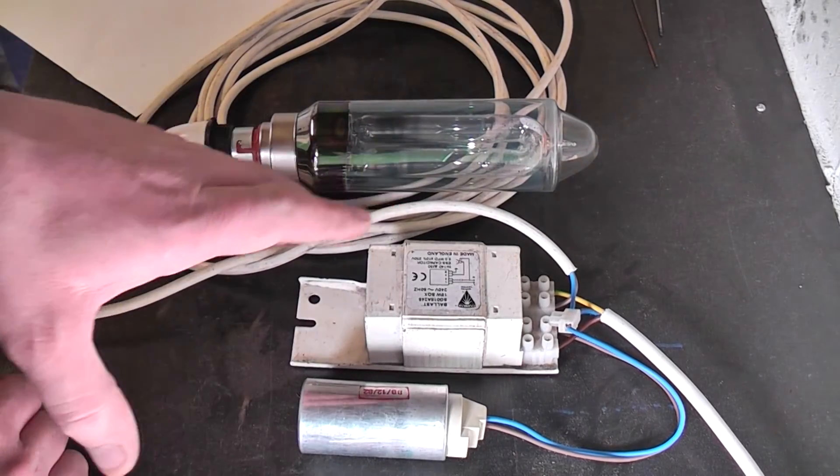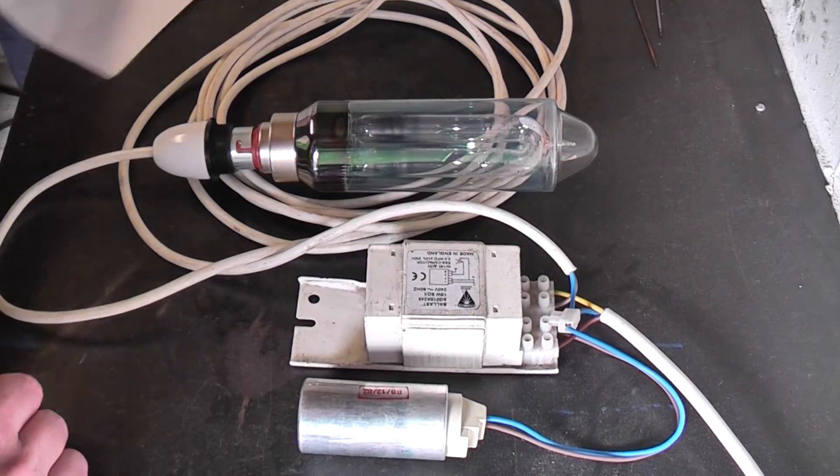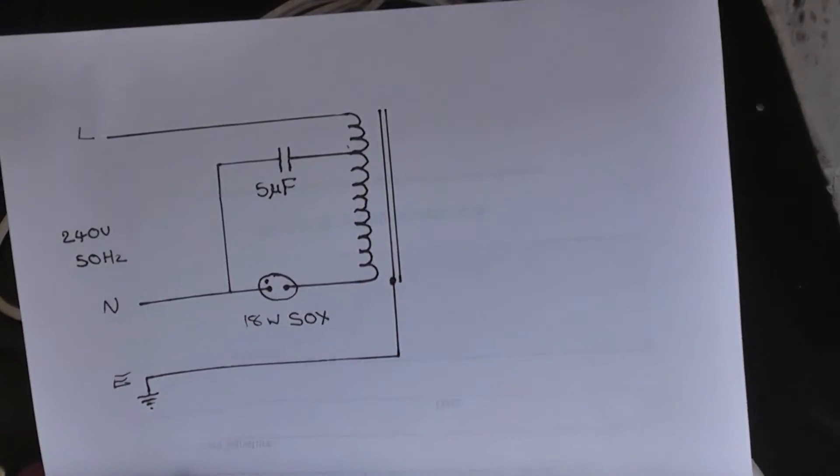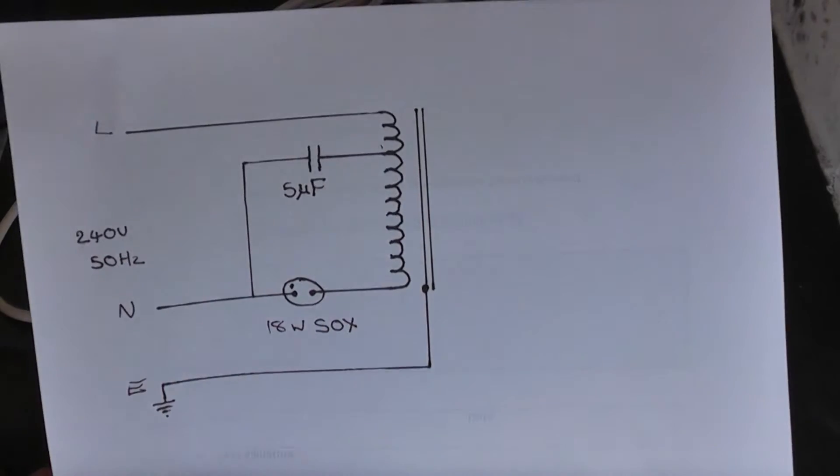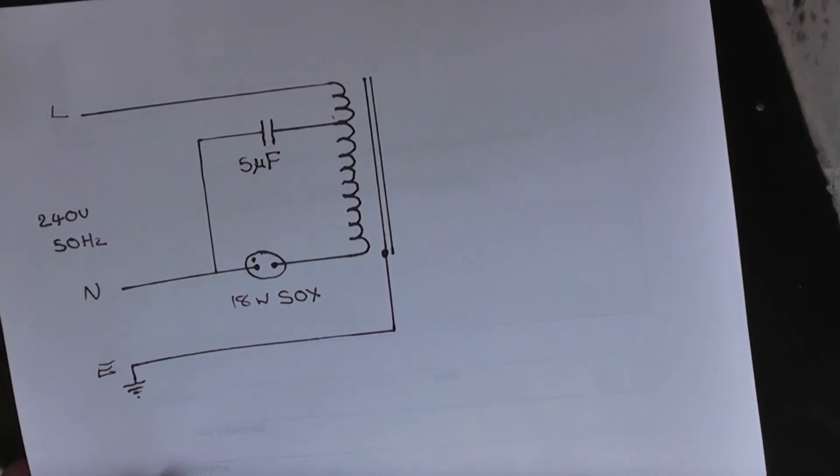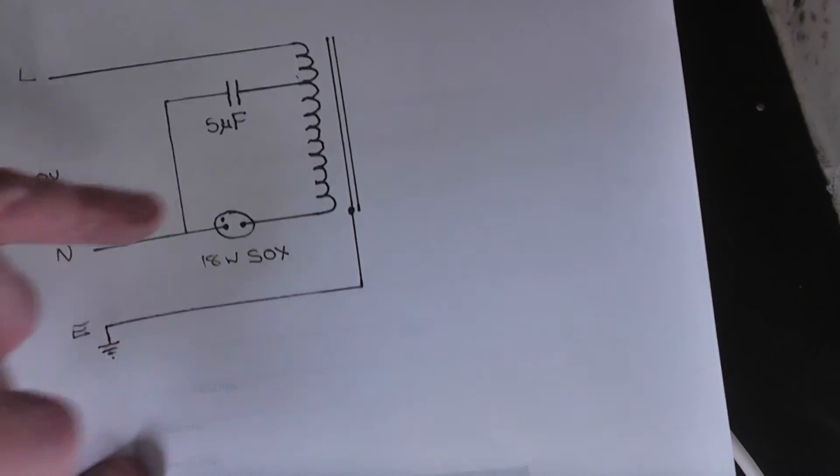Now the interesting how they're actually driving this circuit is what we've got is you've got your ballast there. You've got a 5 microfarad capacitor which serves as two purposes, it serves as power factor correction when the lamps running but it also helps to start the lamp.